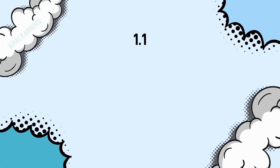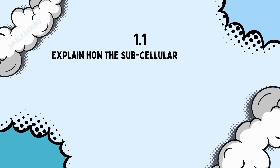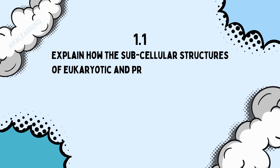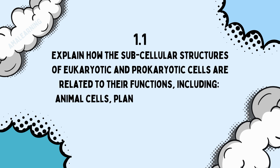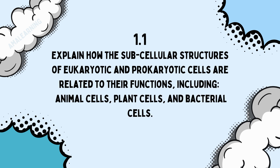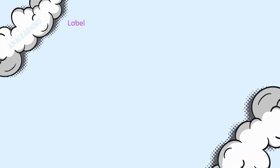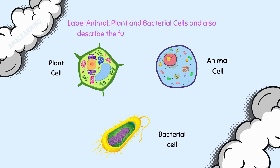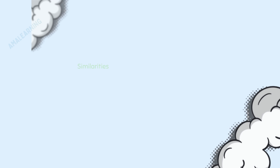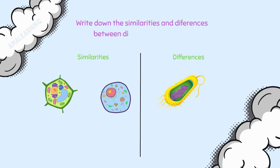Specification point 1.1: Explain how the subcellular structures of eukaryotic and prokaryotic cells are related to their functions, including animal cells, plant cells, and bacterial cells. To successfully answer any GCSE question linked to this specification point, you will need to be able to label animal, plant, and bacterial cell organelles, and also describe the functions of these organelles. The most challenging questions linked to this specification point will be comparative questions, where you will be asked to write down the similarities and differences between different types of cells.